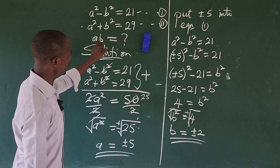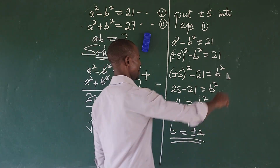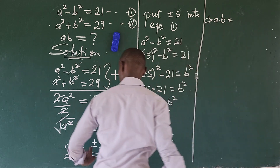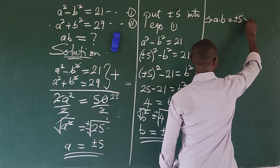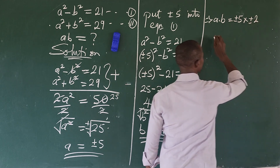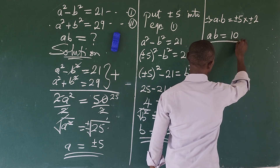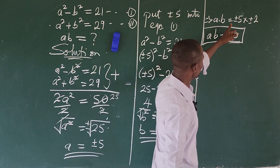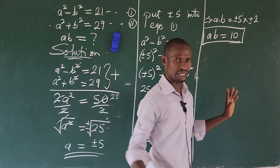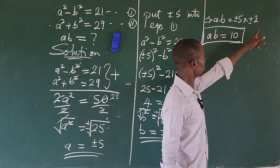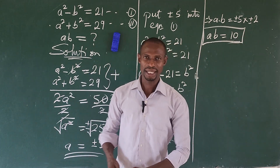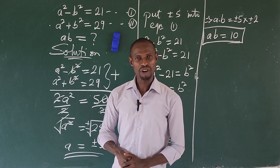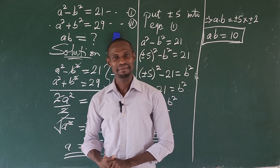Now we solve for a times b. We have a times b equals (±5) times (±2). Taking the first case: positive 5 times positive 2 gives plus 10. Taking the second case: negative 5 times negative 2 also gives plus 10. So our final answer is a times b equals positive 10. That brings us to the end of this tutorial — if you learned something, drop it in the comments. See you in the next video — keep winning, bye for now!